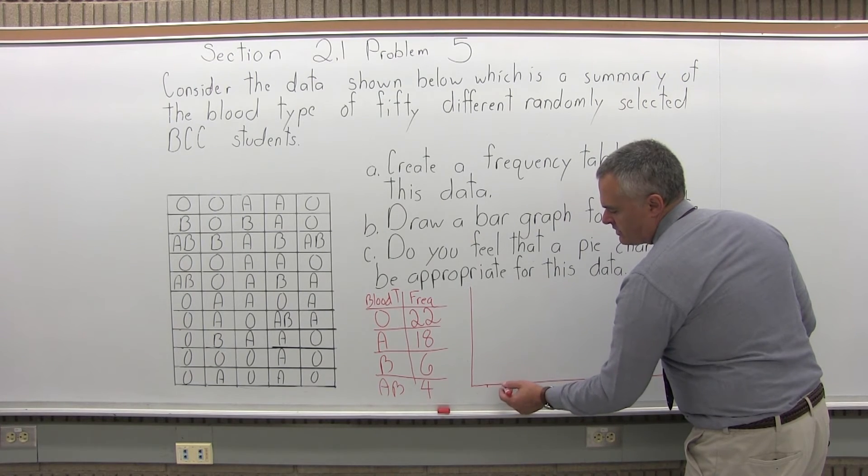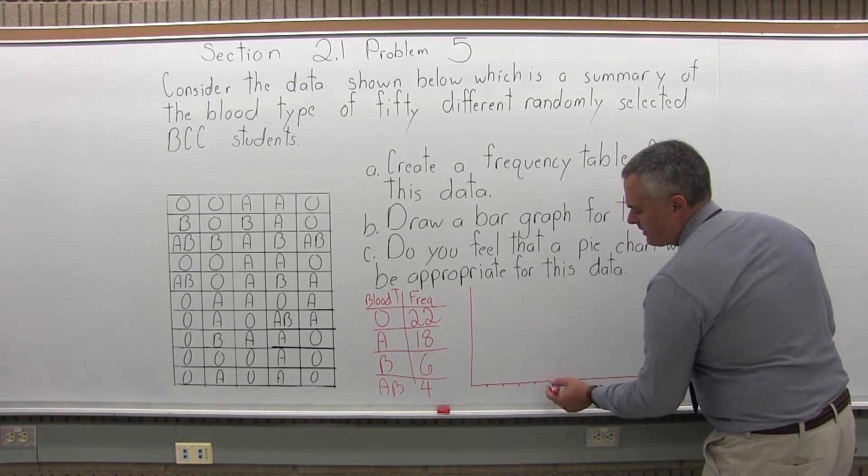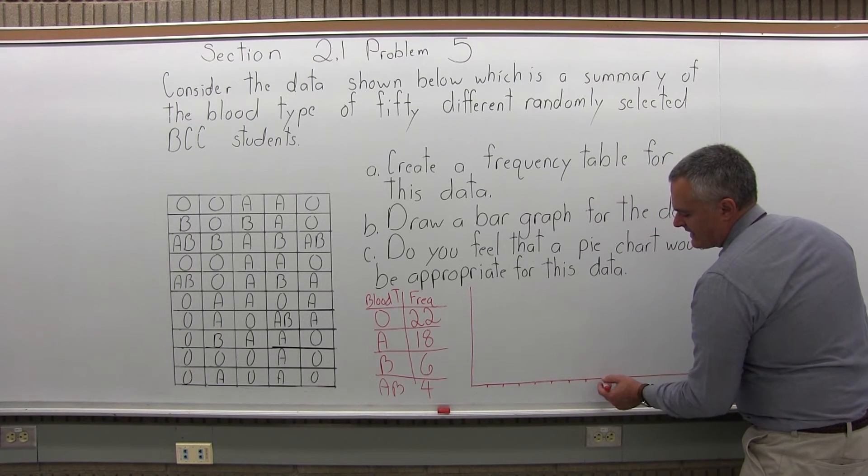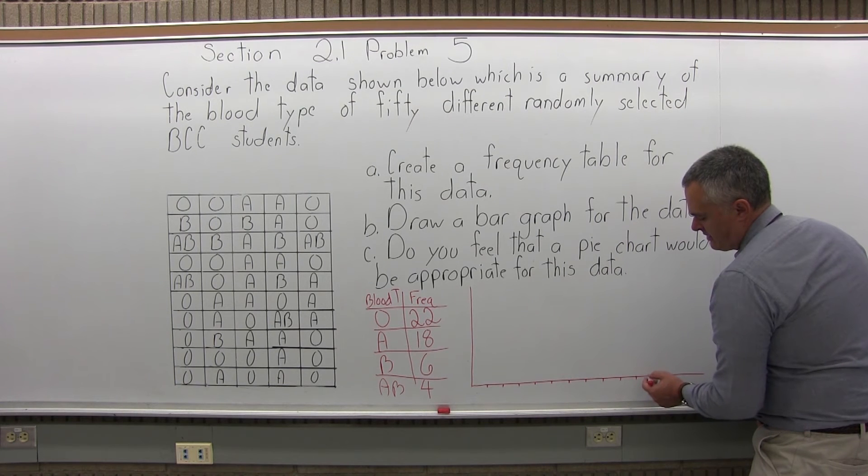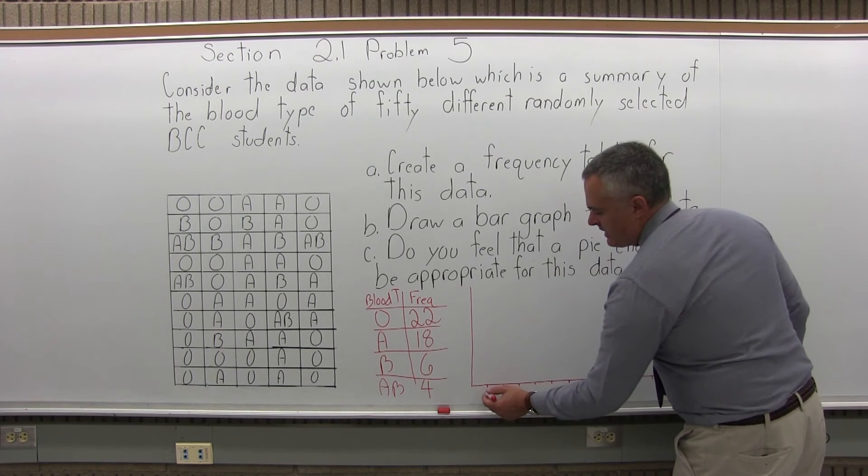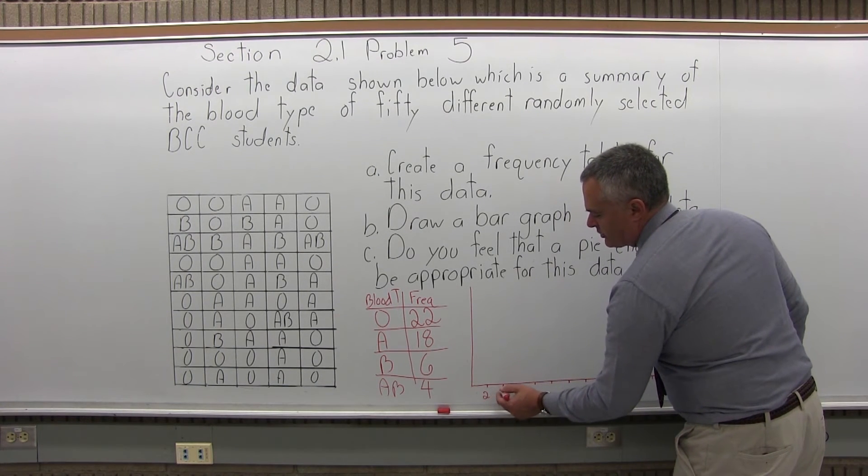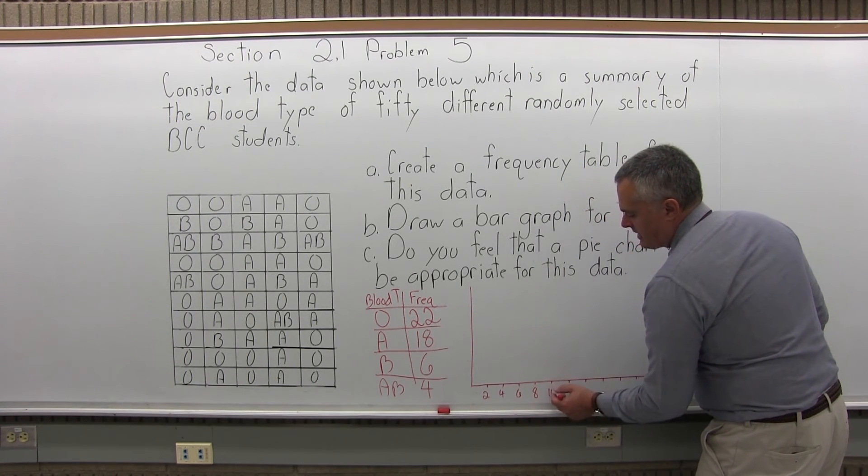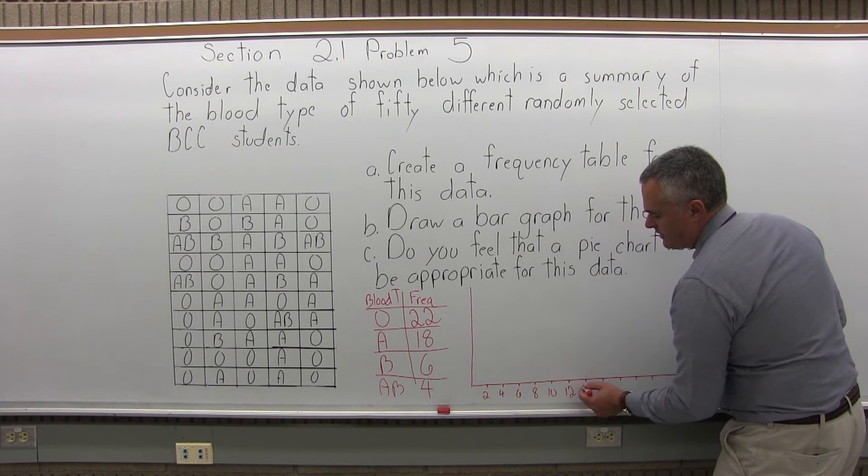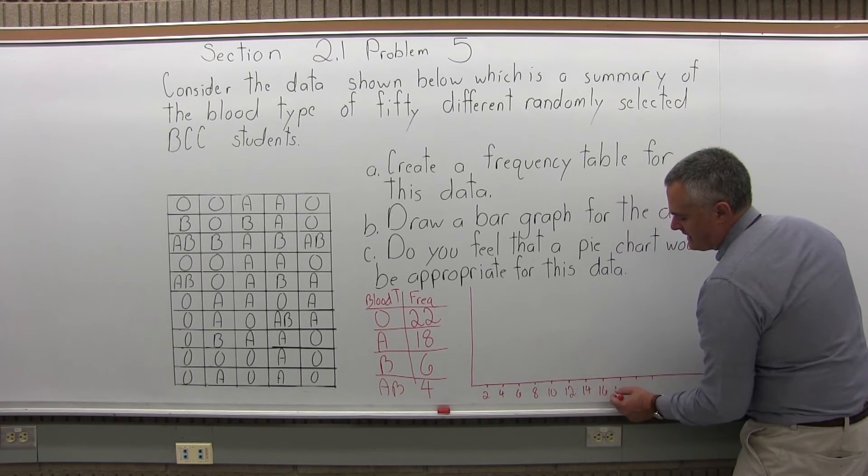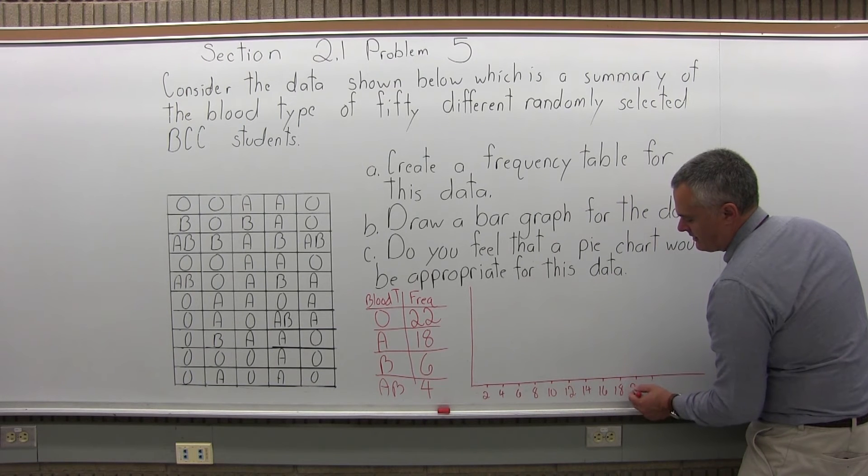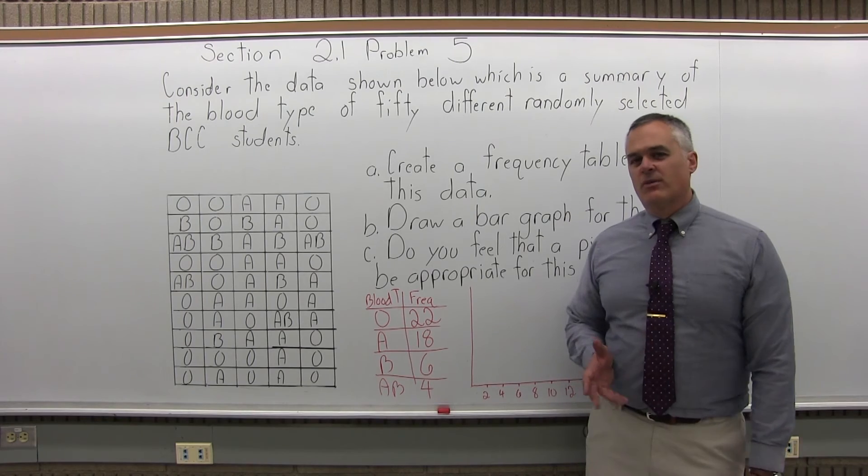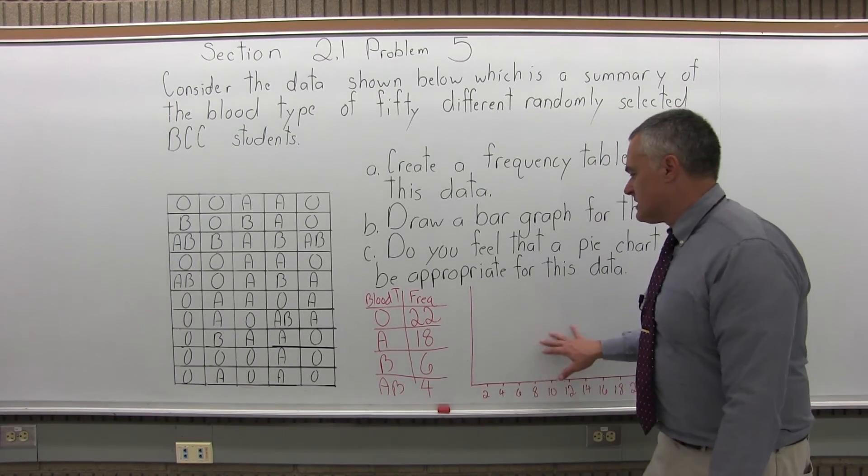So I'm going to go two at a time. I'm going to have 1, 2, 3, 4, 5, 6, 7, 8, 9, 10, 11. And that's far enough. And going two at a time, they would get labeled 2, 4, 6, 8, 10, 12, 14, 16, 18, 20, 22. This one is kind of close whether I'd want to go two at a time or five at a time. As long as it's labeled, it's okay.